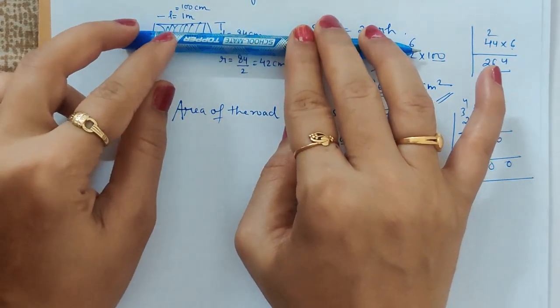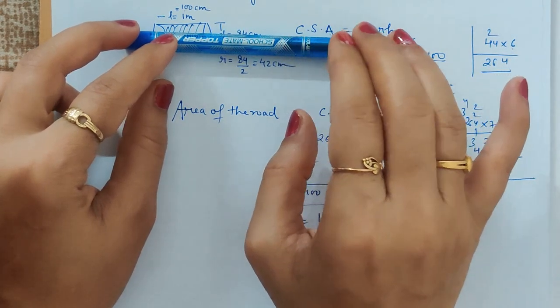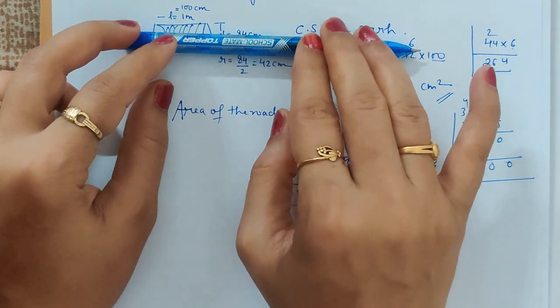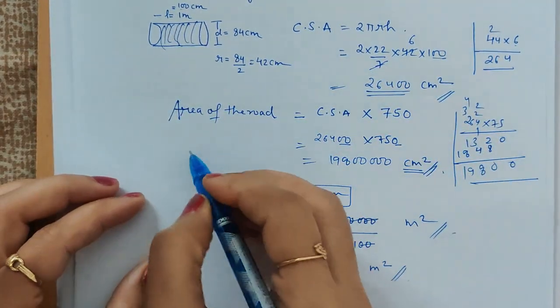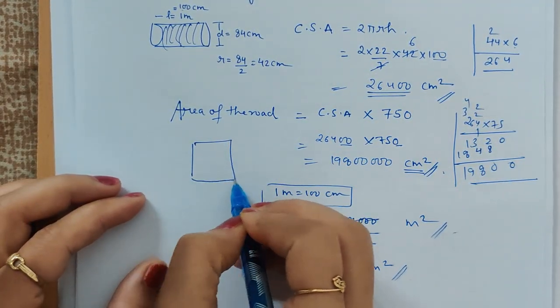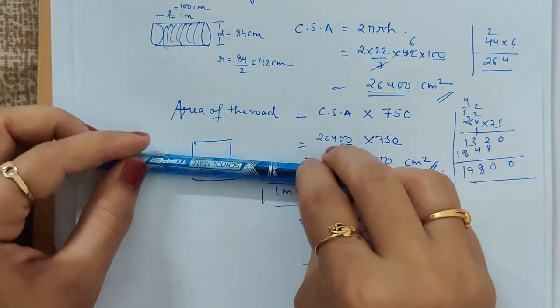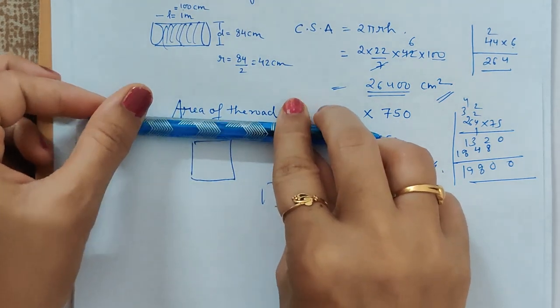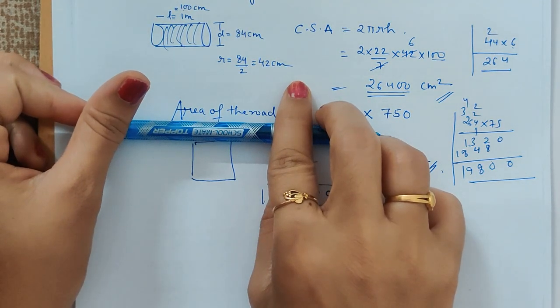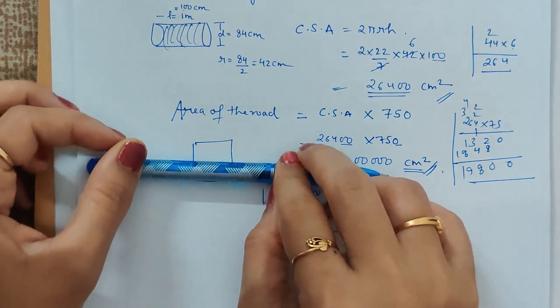Likewise, the number of revolutions it will take, or is given in the question, will give us the total area of the road. Suppose we have to find area of this region. How many times does this pen have to rotate itself for covering the area? The number of times it will revolve